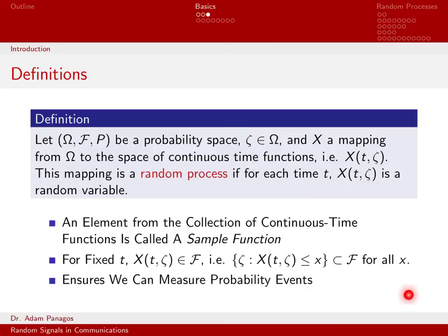Some other definitions just briefly. Basically, if we pick just one of these signals, x of t comma zeta, just one example, the nomenclature we use for that is what we call a sample function. So when I plot one instance of the continuous time random process, what I have plotted is called a sample function of the random process.